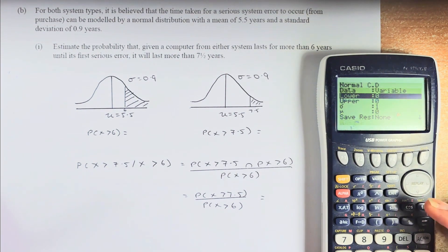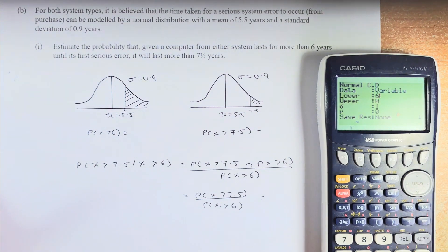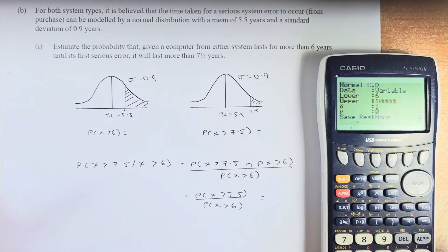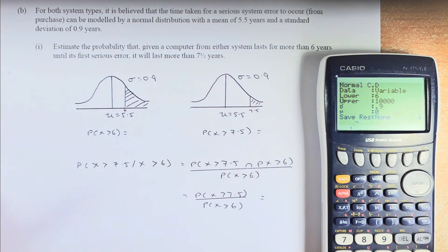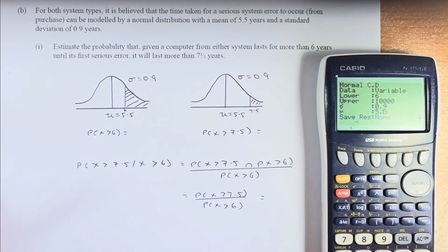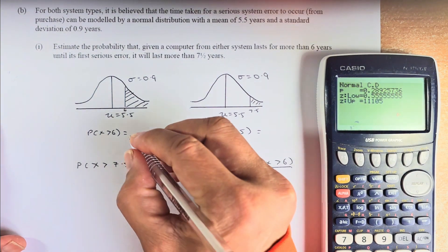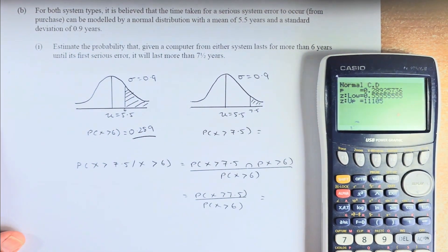And now we are ready to key in. The lower is where it starts. It starts at 6, so we are going to put a 6. Execute. Upper is where it ends. It could be any number. We put 10,000 or 1 million. Execute. Sigma is 0.9. Execute. And then your mu, the mean, is 5.5. Execute. And you execute one more time. And the answer is 0.289. So we are going to put here 0.289 for the probability.